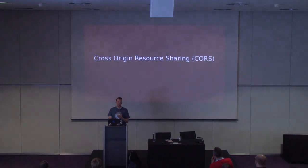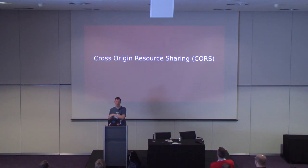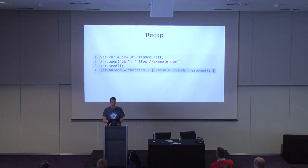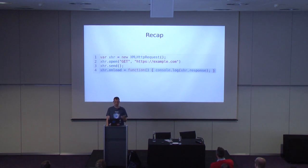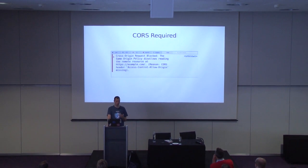What we do instead is use cross-origin resource sharing (CORS) — a way for a website to declare a resource as public, allowing anyone on the internet to read it regardless of the same-origin policy. Using XMLHttpRequest to get a resource on a different origin will fail if the origin doesn't opt in to resource sharing — for example, your home router or a private JSON endpoint — and the browser gives an error explaining how to do it correctly.